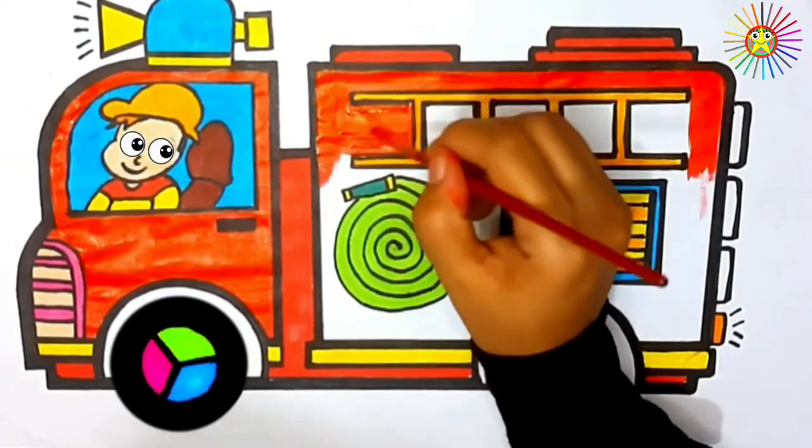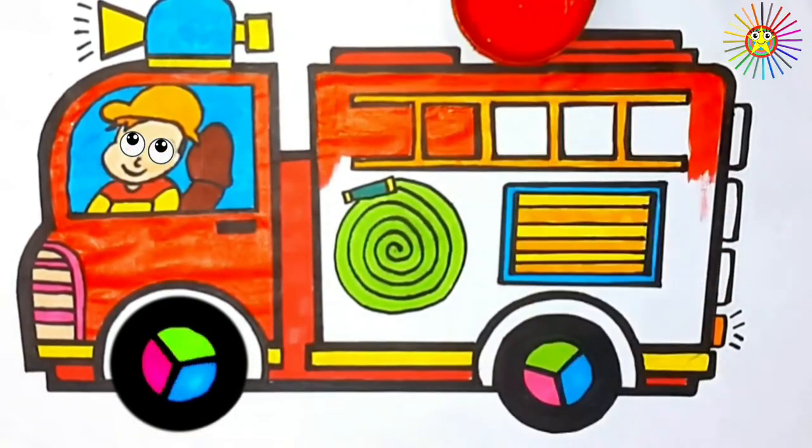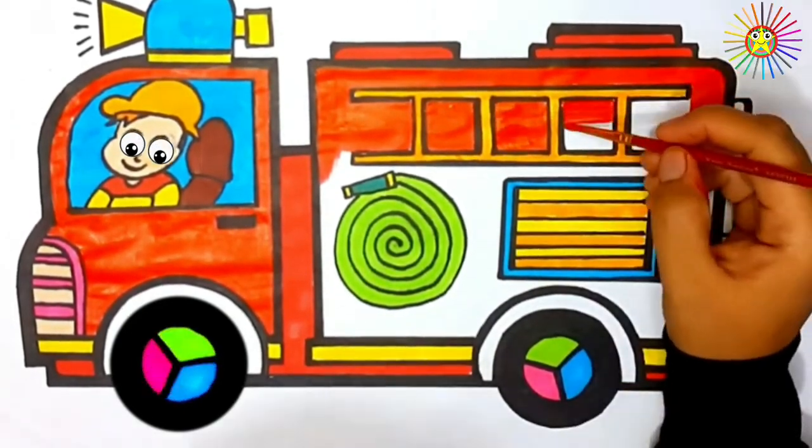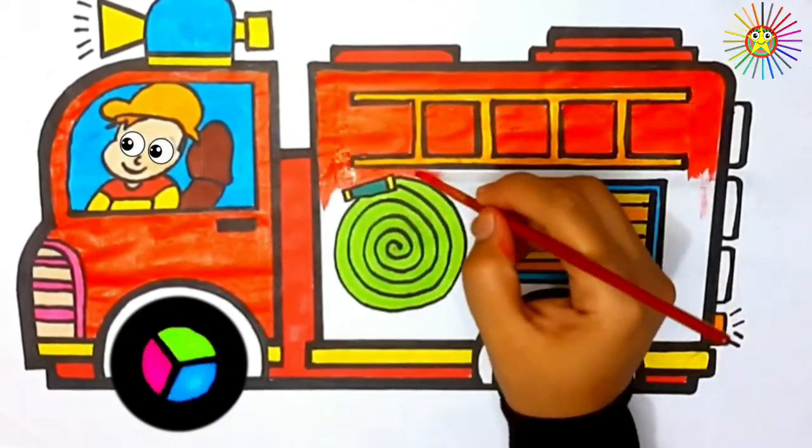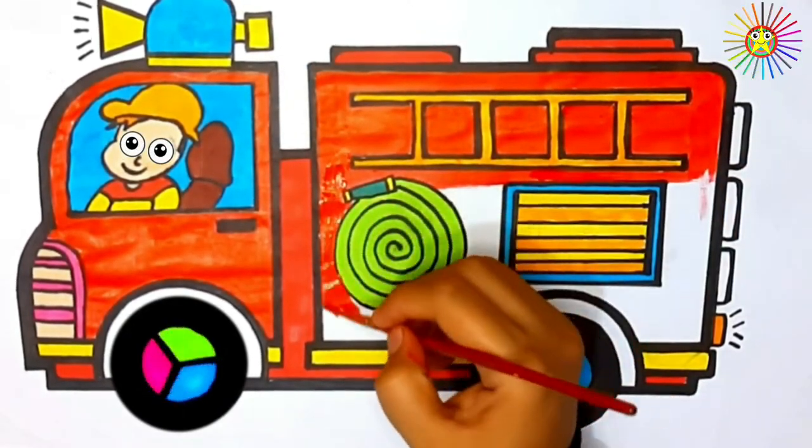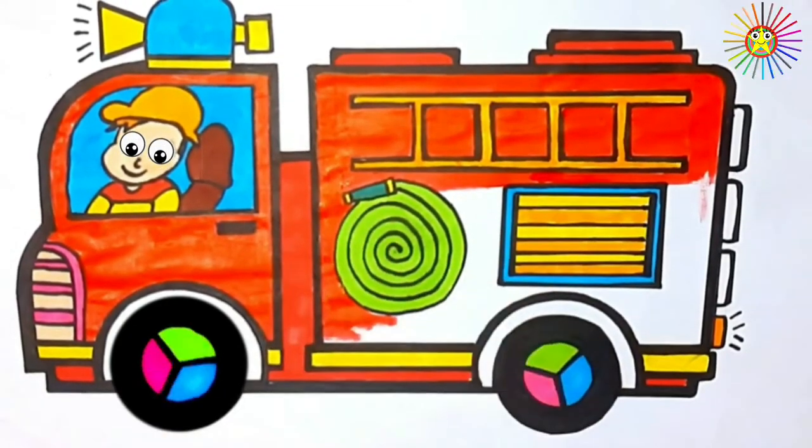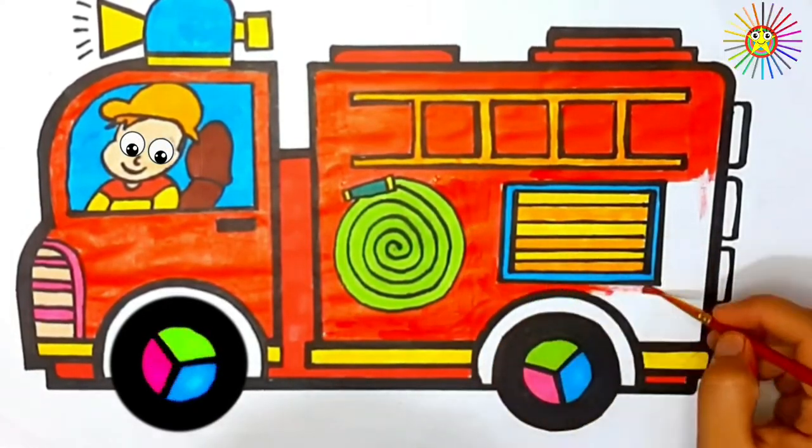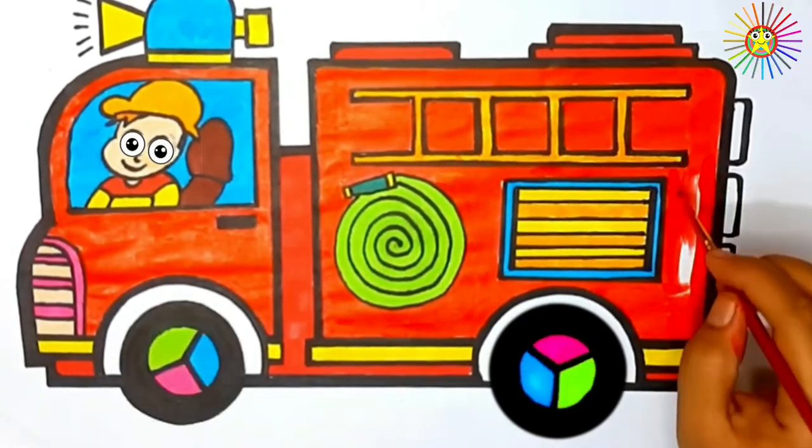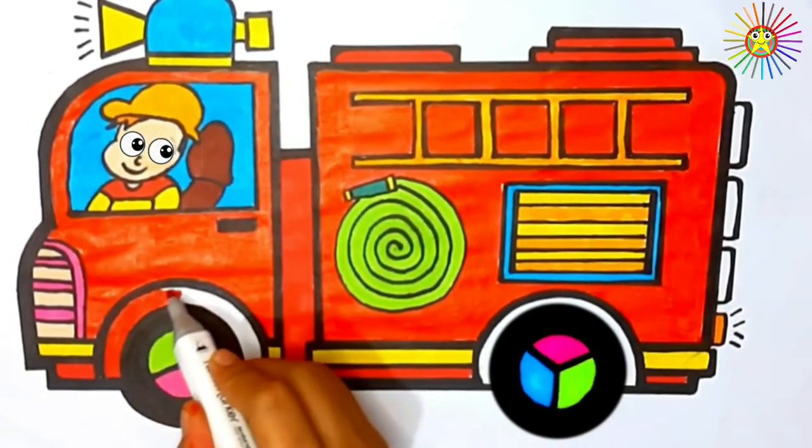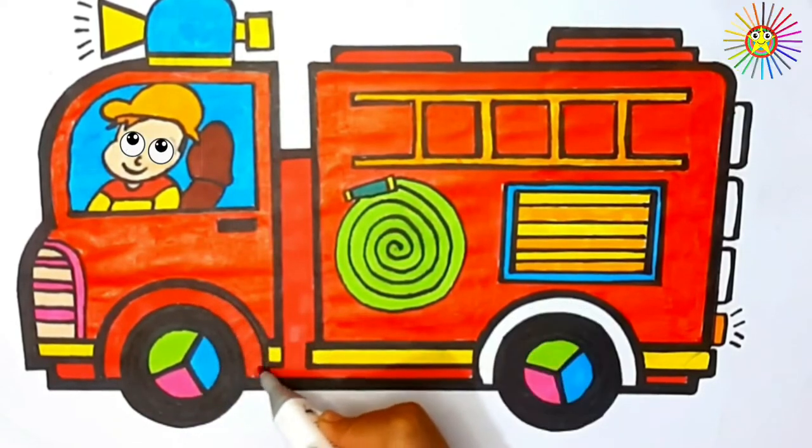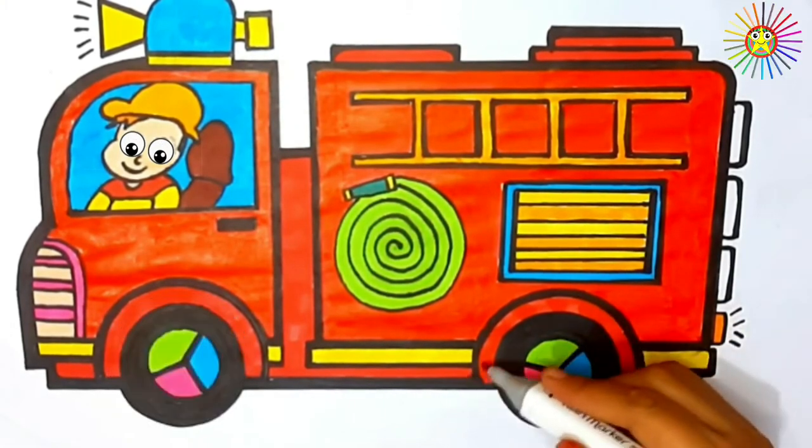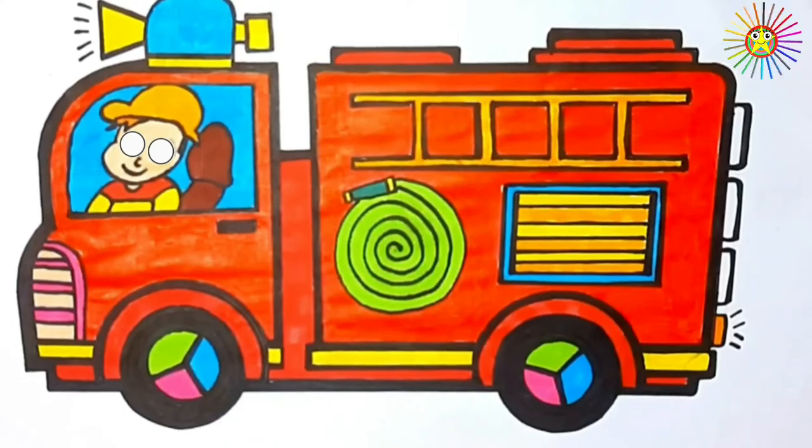Old MacDonald had a farm, E-I-E-I-O. And on his farm he had some sheep, E-I-E-I-O. With a baa here and a baa there, here a baa, there a baa, everywhere a baa baa. Old MacDonald had a farm, E-I-E-I-O. And on his farm he had a cow, E-I-E-I-O. With a moo here and a moo there.